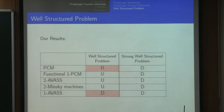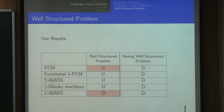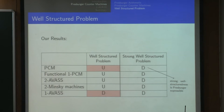These are all the classes of models we look at, and here are the results. We look at the well-structured problem and the strong well-structured problem for all these classes. The well-structured problem turns out to be quite hard—undecidable for most classes. But we do have decidability for one AWAS: one counter with affine transitions. The highlighted results are the ones I'll be discussing in this talk; for the others, check the paper. I'll get the strong well-structured problem out of the way first.